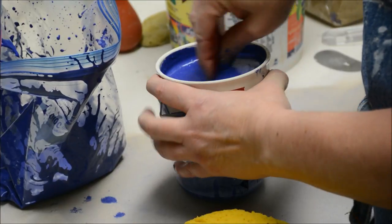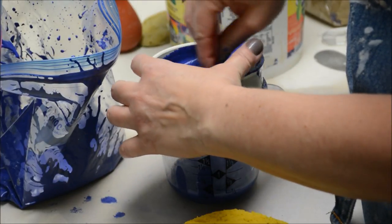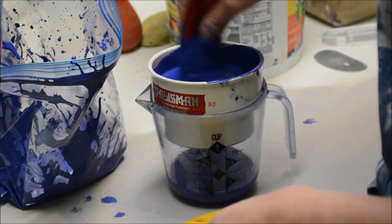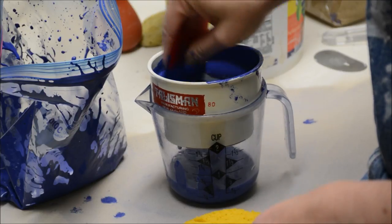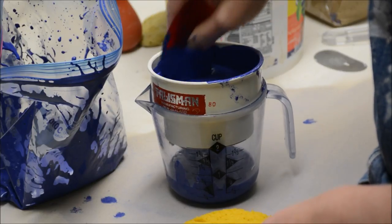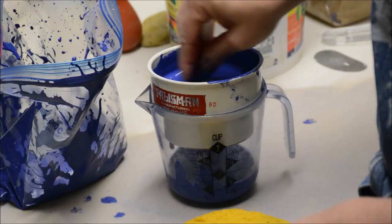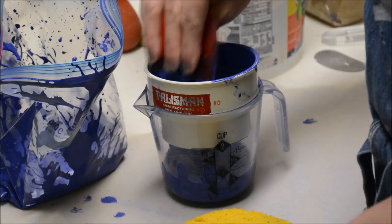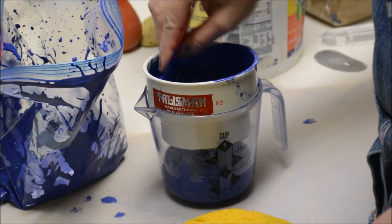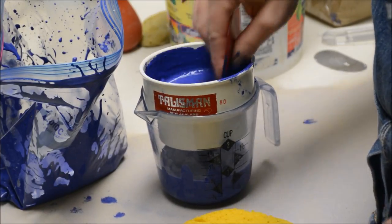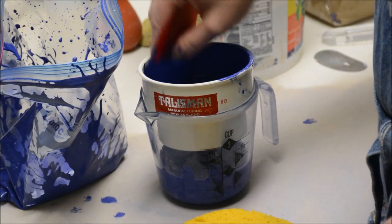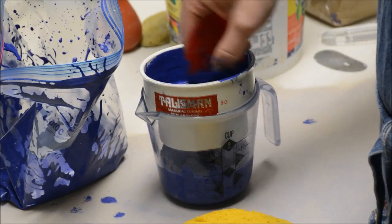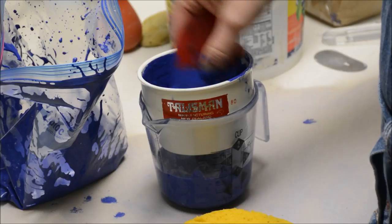I am just using a rib to kind of encourage it, to kind of stir it and encourage it to go through the screen. So the sieve is going to incorporate any particles or lumps that might not be fully incorporated as when I mixed it up in the bag. If you skip this step, I have found that you get little specks of color that aren't quite so incorporated into your clay body. So I like to really sieve this to get it uniform.